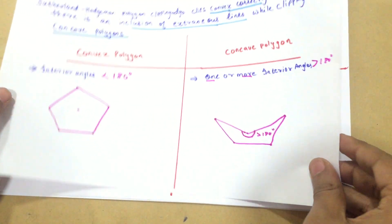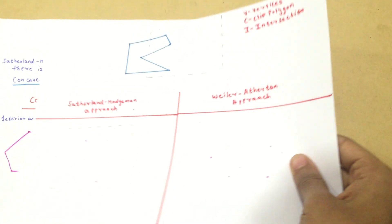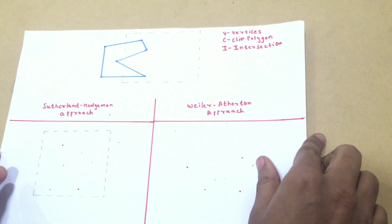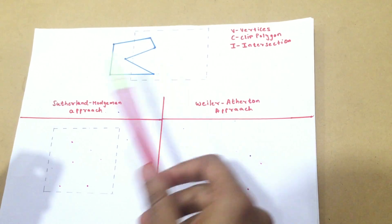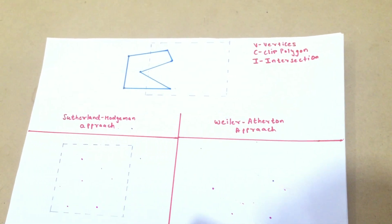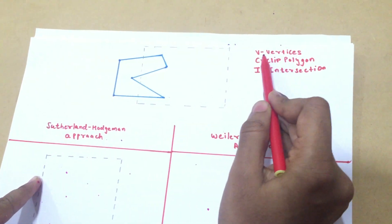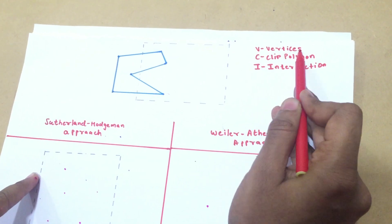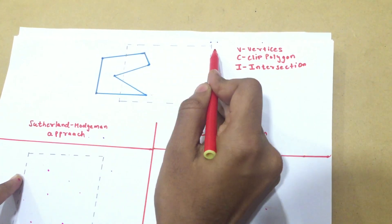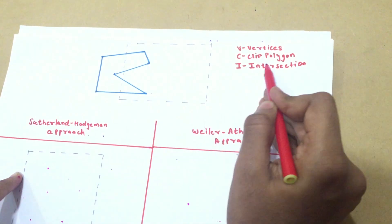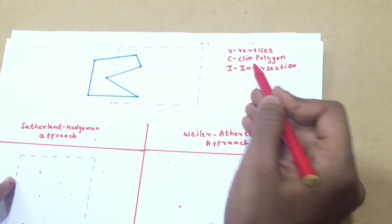Now that the difference between convex and concave polygon is clear, let's head to the algorithm. Let us assume that we are given a concave polygon in the figure. I have drawn a legend here which says that V are the vertices of the polygon, C is the clip polygon — that is my window — and I are the intersections of the vertices with the clip polygon.